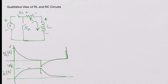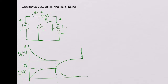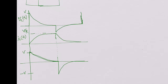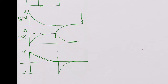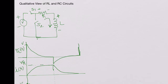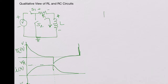From the voltage point of view, the RL circuit acts like a high-pass filter. Whenever there is a sudden change in voltage it passes the voltage, but when the voltage is not changing the voltage across the inductor goes to zero.